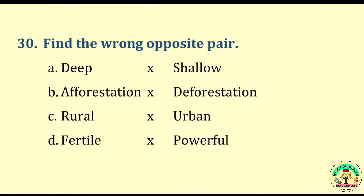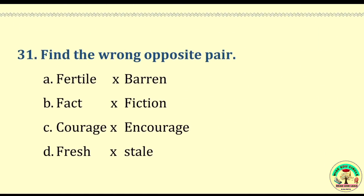Question number thirty: Find the wrong opposite pair — deep/shallow, afforestation/deforestation, rural/urban, or fertile/powerful. The wrong opposite pair is fertile/powerful. Question number thirty-one: Find the wrong opposite pair — fertile/barren, fact/fiction, courage/encourage, or fresh/stale. The wrong opposite pair is courage/encourage.